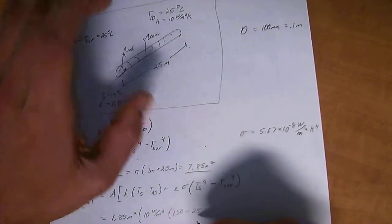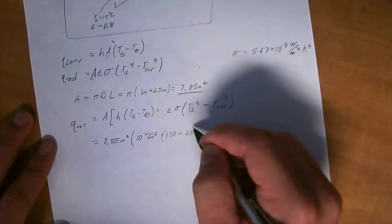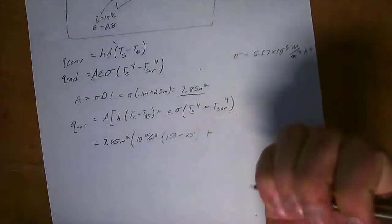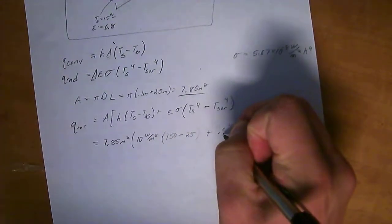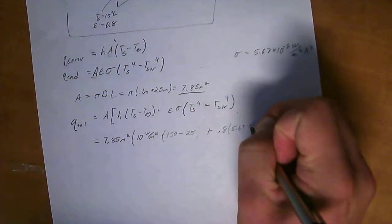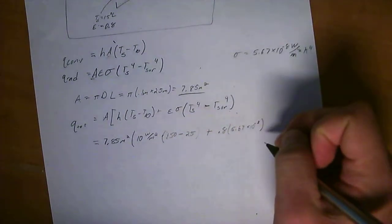If the outside was actually hotter than the pipe and heat was moving in instead of moving out, these numbers would actually be reversed, or this layout would be reversed. Okay. Plus the emissivity of 0.8 and Boltzmann of 5.67 times 10 to the negative 8.